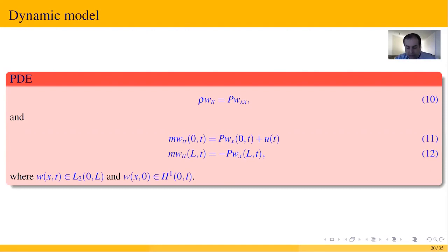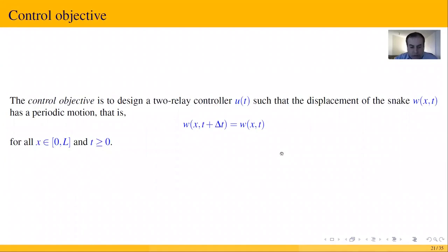The control objective is to design a two-relay controller such that the displacement of the snake, w, has a periodic motion.